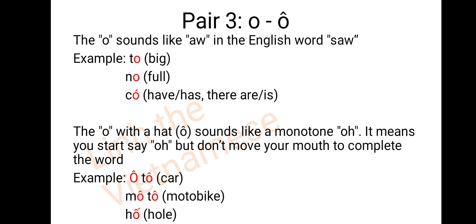Pair 3: O and Ô with a head. The O sounds like 'O' in English. For example: to, no, co. The Ô with a head sounds like a monotone O — it means you start saying O but don't move your mouth to complete the sound. For example: ô-tô, mô-tô, hố.